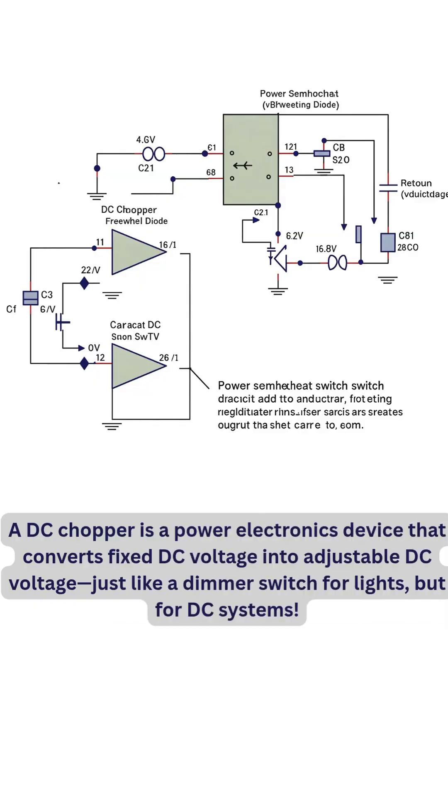A DC chopper is a power electronics device that converts fixed DC voltage into adjustable DC voltage, just like a dimmer switch for lights, but for DC systems.